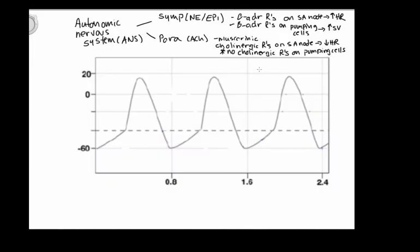The autonomic nervous system influences the heart and has two branches: the sympathetic branch and the parasympathetic branch. Looking at the sympathetic branch, we have norepinephrine from sympathetic neurons and epinephrine from the adrenal medulla, and they interact with adrenergic receptors on the heart.